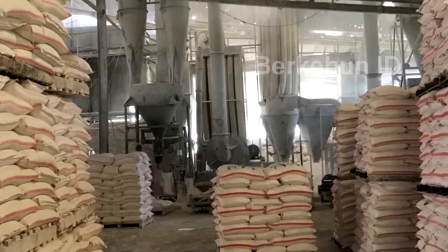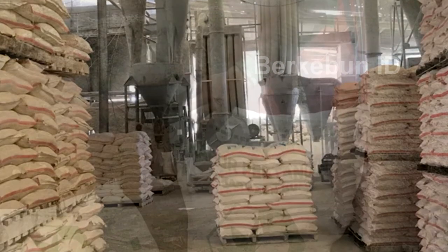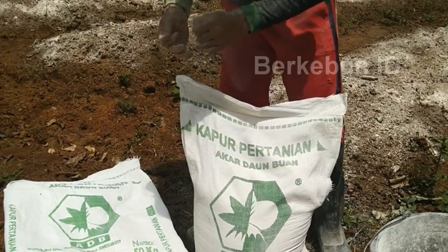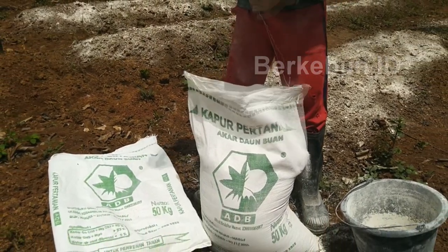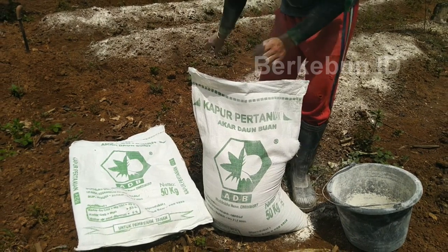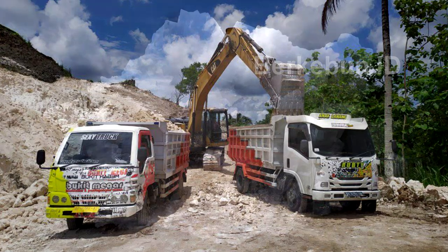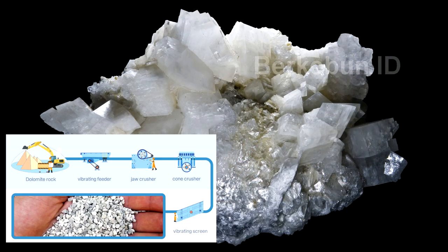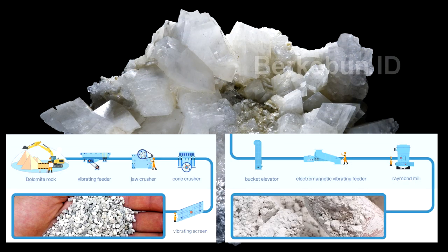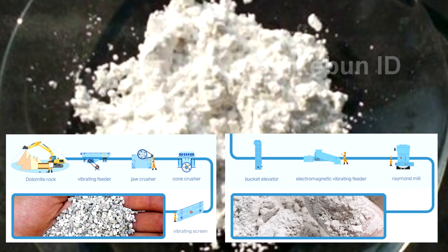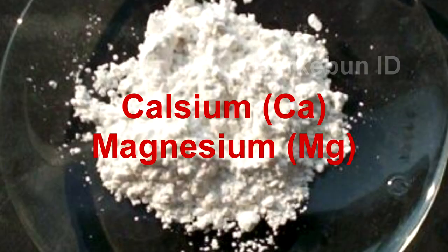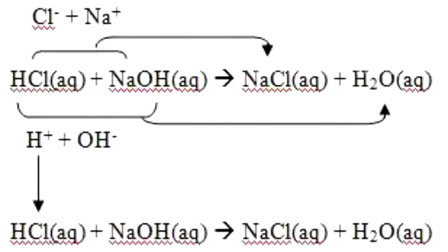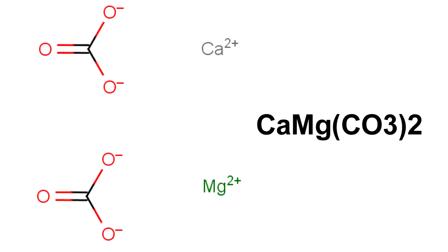Kapur dolomit merupakan kapur berkadar magnesium tinggi, dan baik digunakan untuk tanah perkebunan serta untuk perikanan maupun tambak. Dolomit dibuat dari batuan dolomit yang dikumpulkan dari proses penambangan. Di dalamnya terdapat kandungan kalsium dan magnesium, atau dapat dikatakan sebagai kalsium-magnesium karbonat, dengan komposisi kimia CaMg(CO3)2.